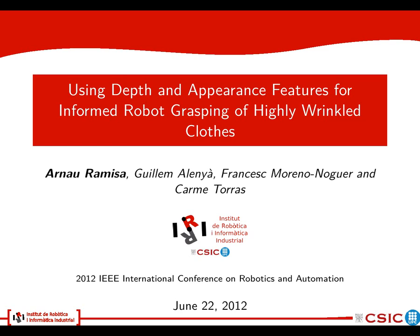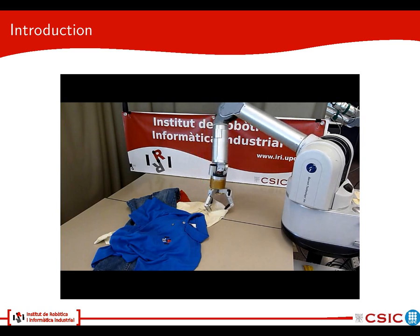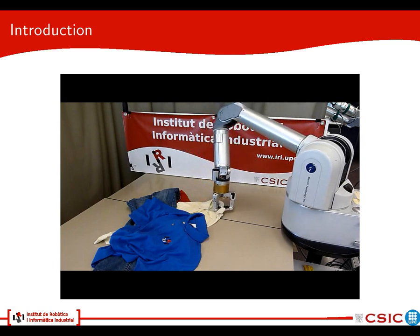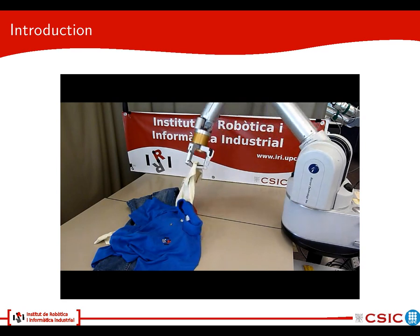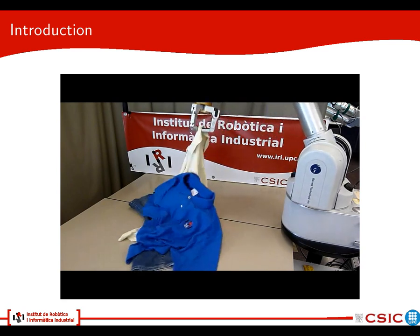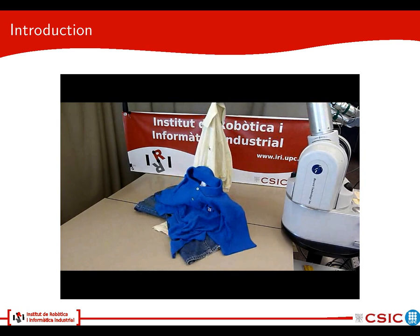Good afternoon. I'm Arnau Ramisa and I will present this tool called 'Using Depth and Appearance Features for Informed Robot Grasping of Highly Wrinkled Clothes.' The objective of our work is to perform grasping of highly wrinkled objects that are clothes, and we want to perform an informed kind of grasping, so we know where we are going to grasp the object from.